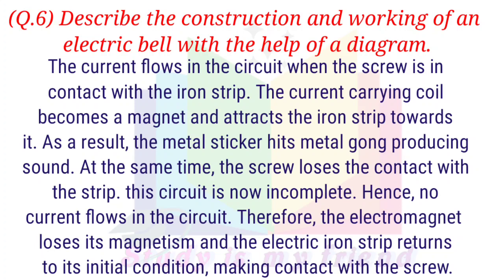At the same time, the screw loses contact with the strip. The circuit is now incomplete. Hence, no current flows in the circuit. Therefore, the electromagnet loses its magnetism and the iron strip returns to its initial condition, making contact with the screw again.